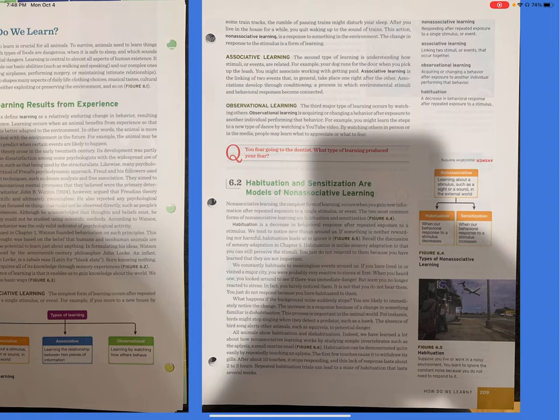Indeed, we have learned a lot about how non-associative learning works by studying simple invertebrates, such as the Aplysia, a small marine snail, Figure 6.6. Habituation can be demonstrated quite easily by repeatedly touching an Aplysia. The first few touches cause it to withdraw its gills. After about 10 touches, it stops responding. And this lack of response lasts about 2-3 hours. Repeated habituation trials can lead to a state of habituation that lasts several weeks.